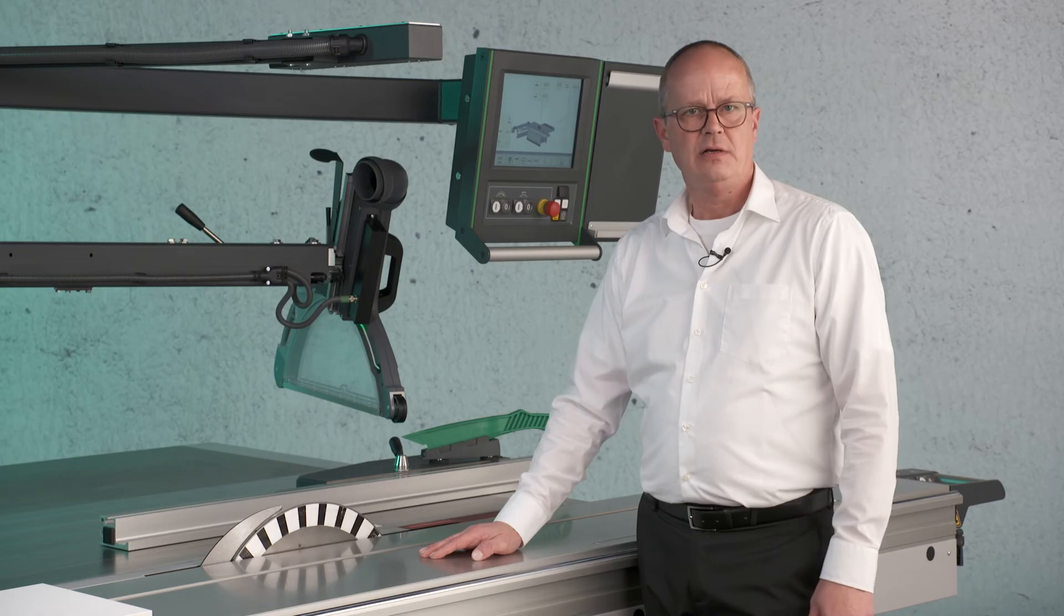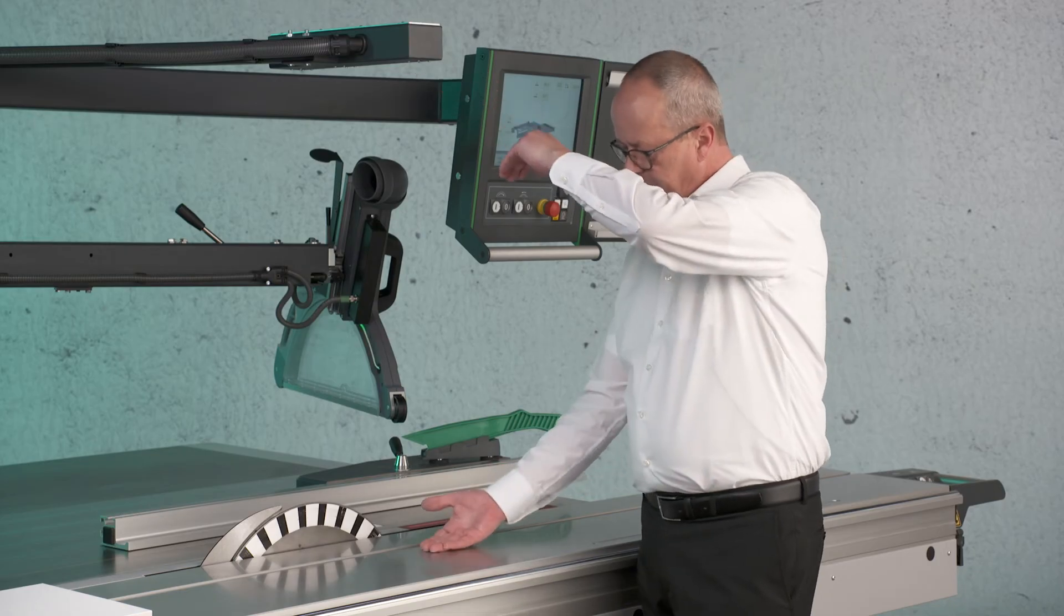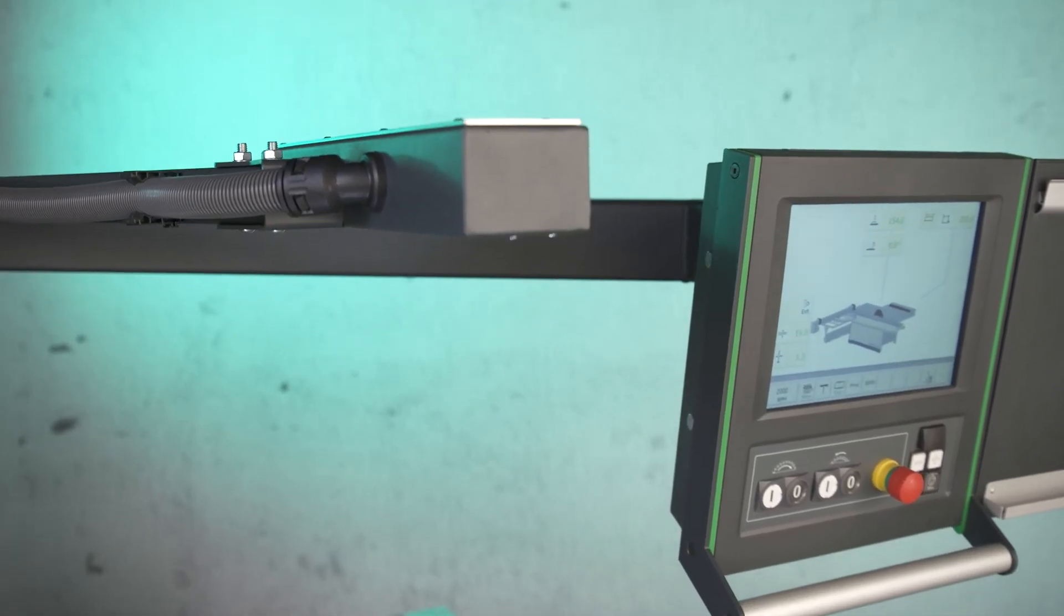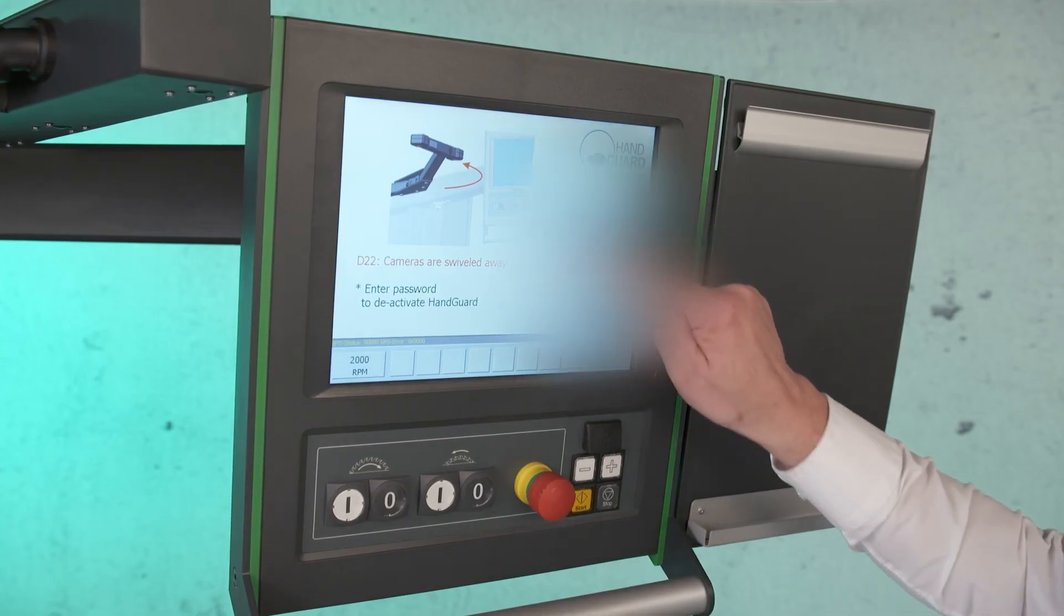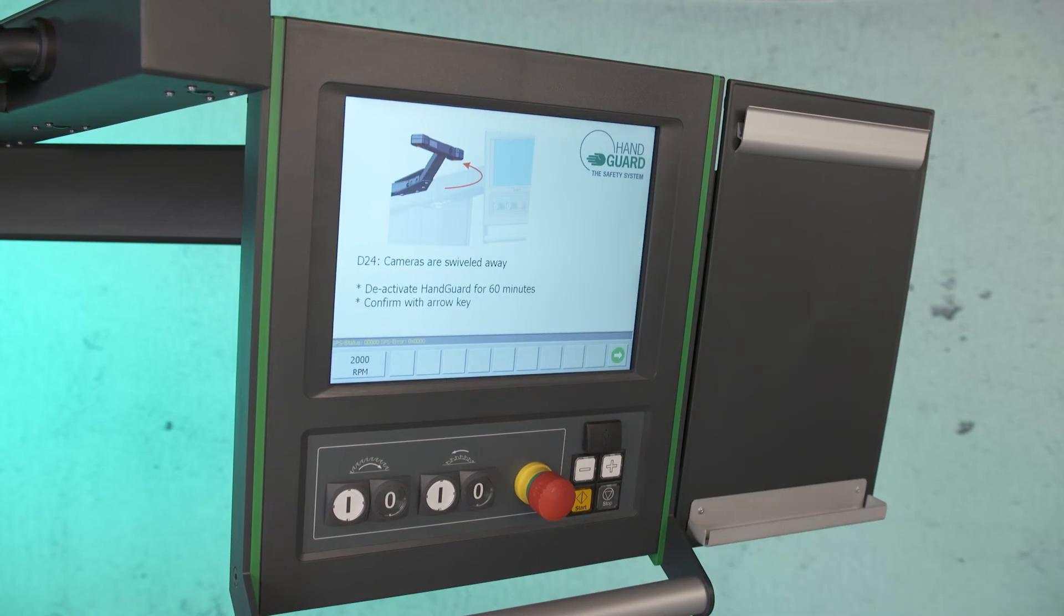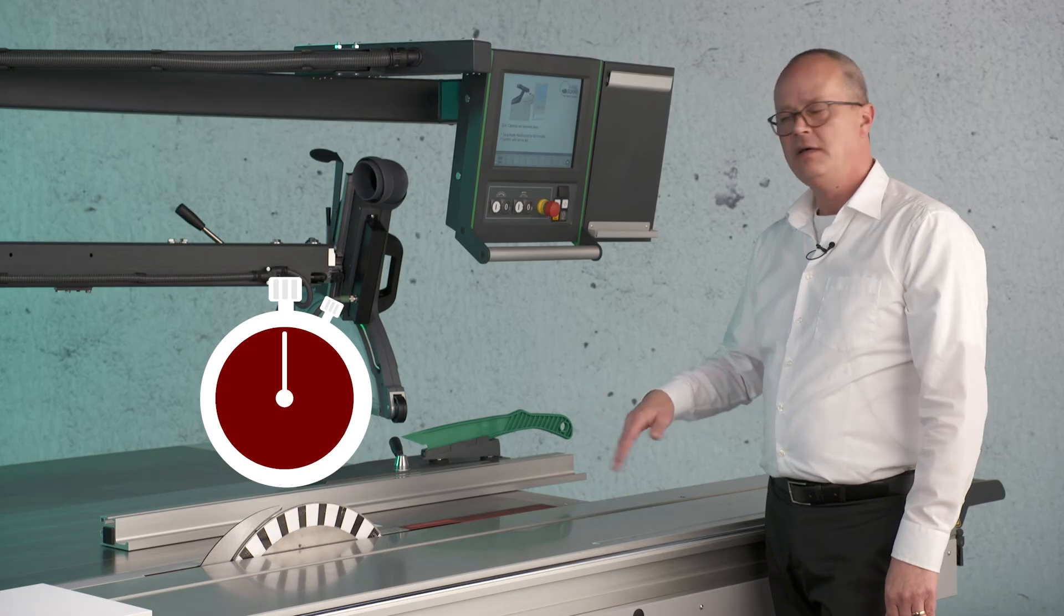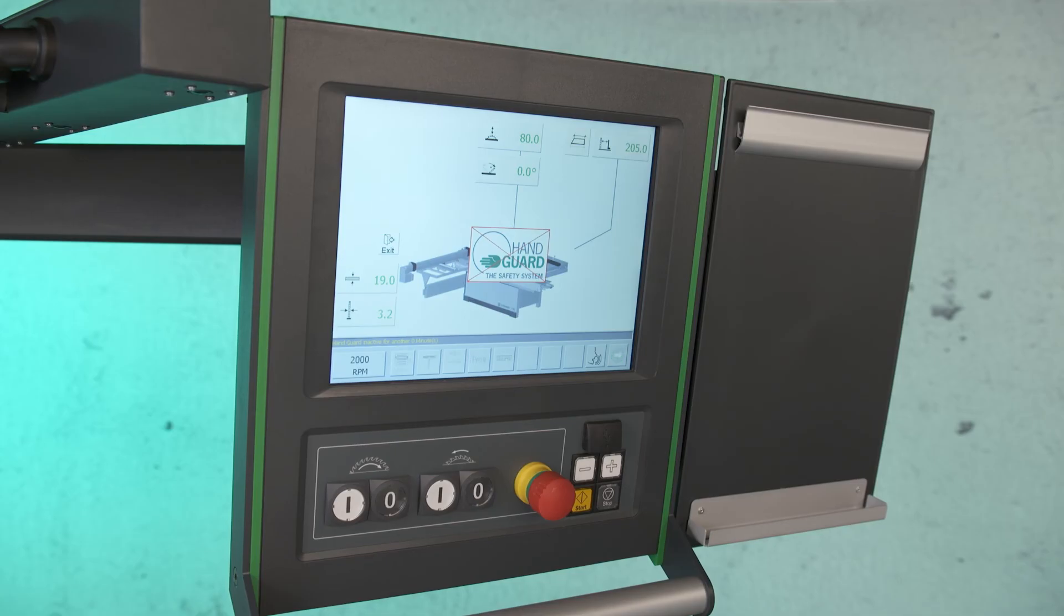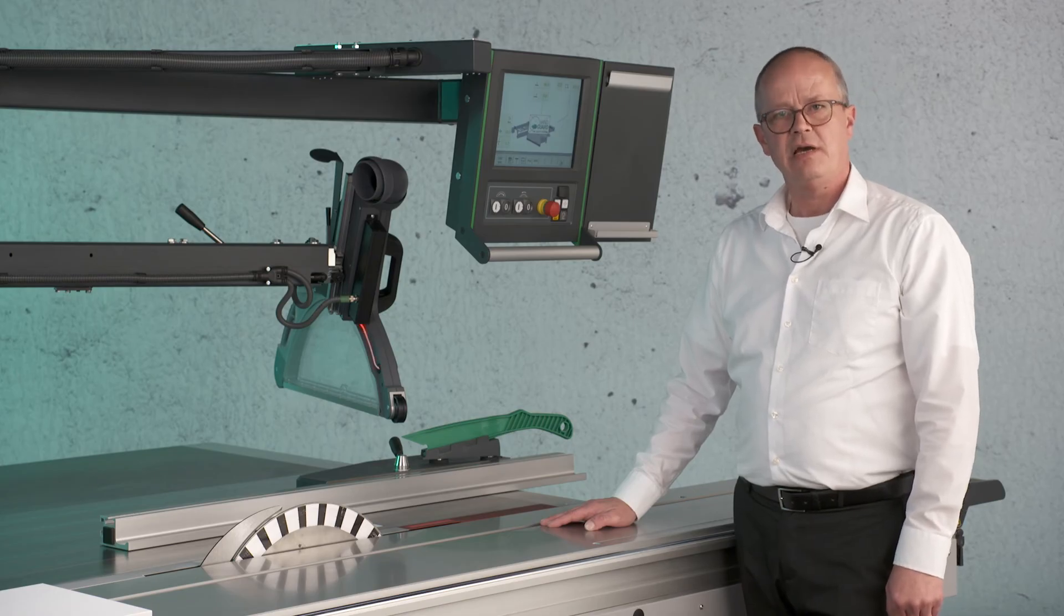What to do if you have tall workpieces like cabinets or door frames, larger than the distance between the table and the camera arm? For this we developed the swivel-away camera arm. I will show it to you. I swivel it away and you can see on the control I get a screen where I have to enter a key. And you get a second message. The second message tells you you can work 60 minutes without the safety system Handguard. This is right now a regular sliding table saw. The last thing you have to do is press the green button, and then we write a little protocol when you swivel away the camera arm and you deactivate the Handguard system.